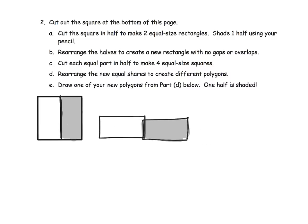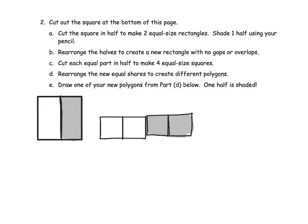Look at that — now I've got a different rectangle. Then it says cut each of those parts in half to make four equal-size squares. So we could cut that in half and cut that in half, and all of a sudden we're going to have four little squares.